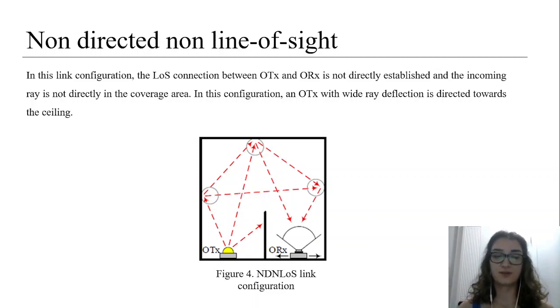Unfortunately, the diffuse configuration maintains high path loss due to the lack of direct path and causes delay in transmitted data. The non-directed non-line-of-sight connection configuration is shown in figure 4.